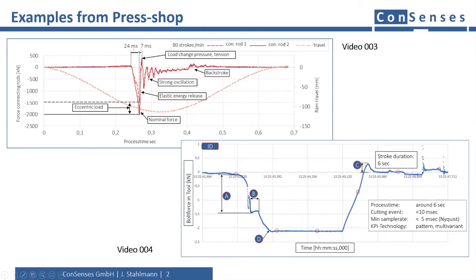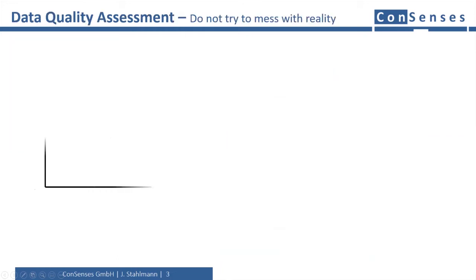Within ConsenSys, we use a simple graph in order to understand the quality situation internally and communicate with our customers and partners. Since we are talking about quality, one axis is quality. We use a rather rough idea of description here. Imagine 100% as the physical truth where all information is contained, and 0% as some snippets of data which simply can't be used.